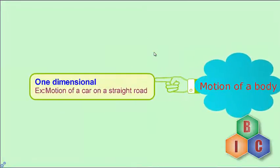The first type is called one-dimensional motion. The example for one-dimensional motion is the motion of a car on a straight road. In one-dimensional motion, only the x-coordinate or the y-coordinate of the body will change with respect to time. Therefore, it is called one-dimensional motion. We can also take the example of a train moving on a straight track as one-dimensional motion.